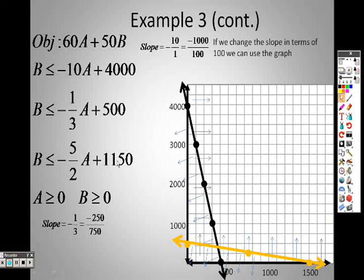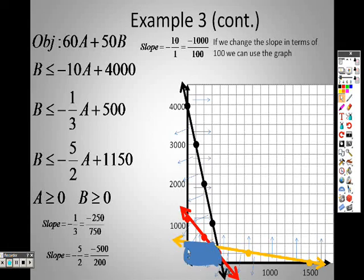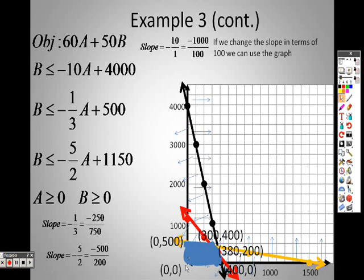And I still have one more to do, which is 1,150. So 1,150 is right about here. And that means I go down about 500 and over 200. And is 0 less than that? Is 0 less than 1,150? You betcha. So I'm shading down again. So here's the areas. All of this down in here is shaded in. Which means I have this point, 0, 500. I have this point here, which is 300, 400. I have this point here, which is 380, 200. And I have this point here, which is 400, 0. And I have this point down here, which is 0, 0. I have 1, 2, 3, 4, 5 different points I need to check.